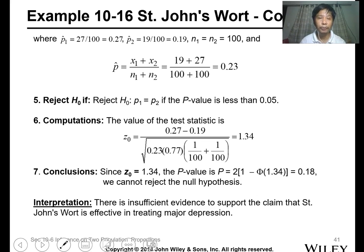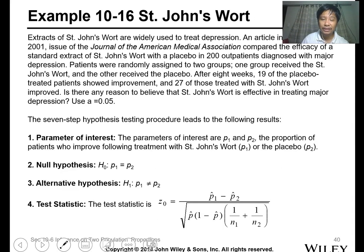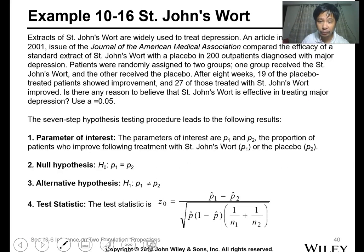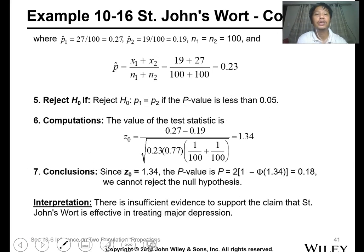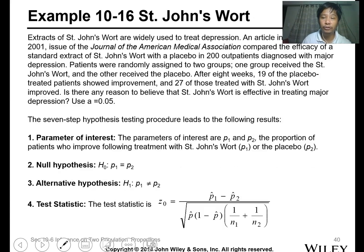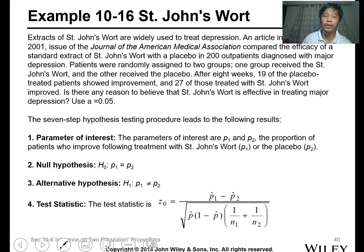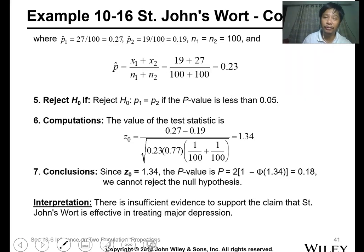For the proportion p-hat with a hat, proportion 1 is 27 over 100, proportion 2 is 19 over 100. P1 is for St. John's Wort, so 0.27. P2 is 0.19 for placebo. P-hat total is 19 plus 27 over 200, which is 0.23. We'll reject when the p-value is less than 0.05.